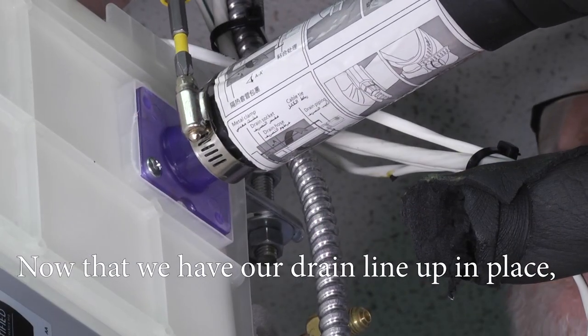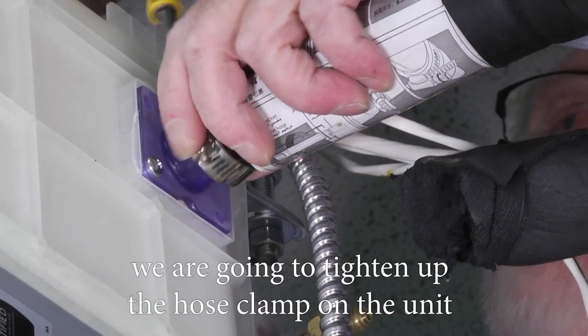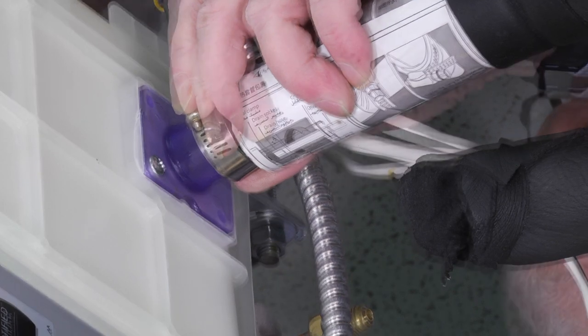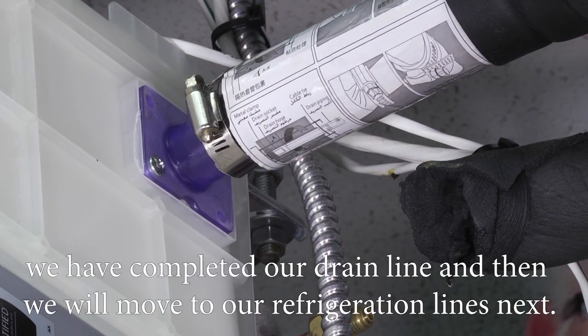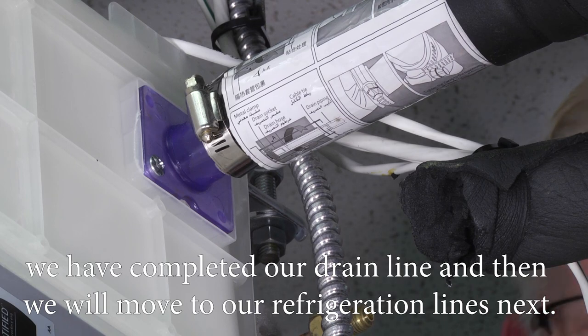Now that we have our drain line up in place, we're going to tighten up the hose clamp on the unit. Once that's securely fastened, we've completed our drain line, and then we'll move to our refrigeration lines next.